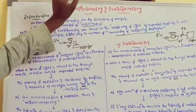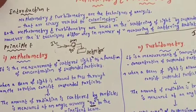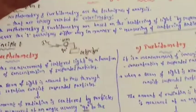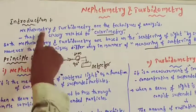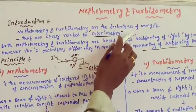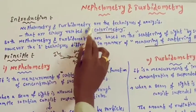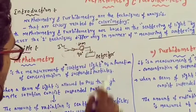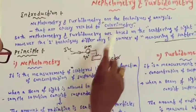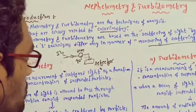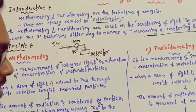Metric means nothing but measurement. The basic concept involved in nephelometry and turbidimetry is that these are techniques of analysis closely related to colorimetry, because the instrumentation of turbidimetry is similar to nephelometry and turbidimetry.